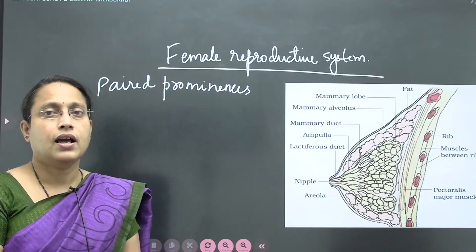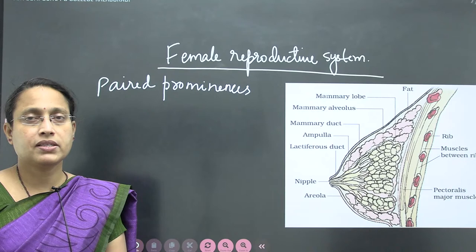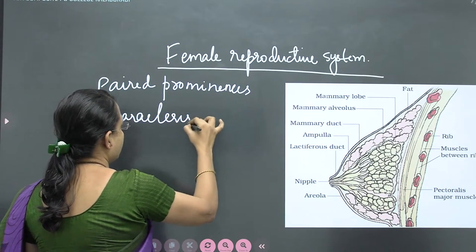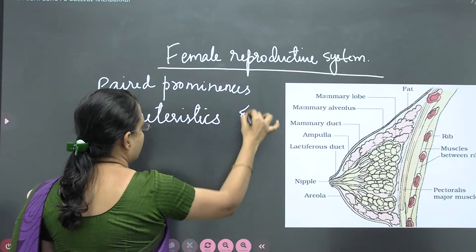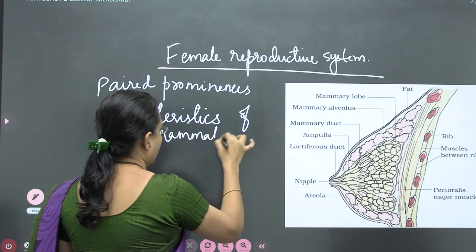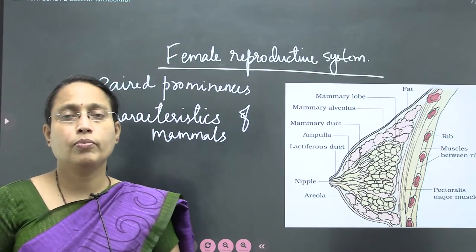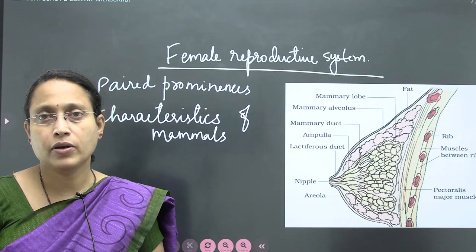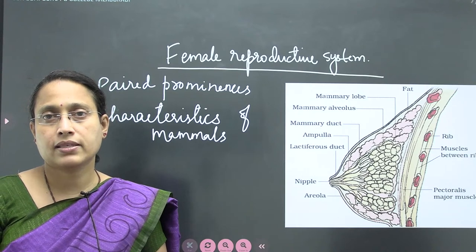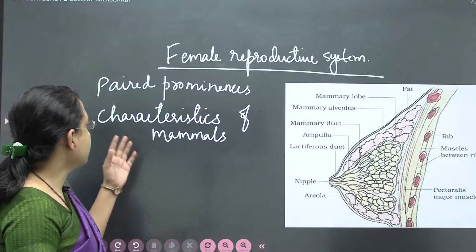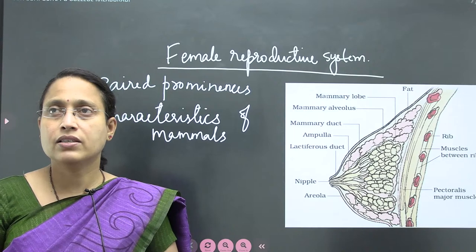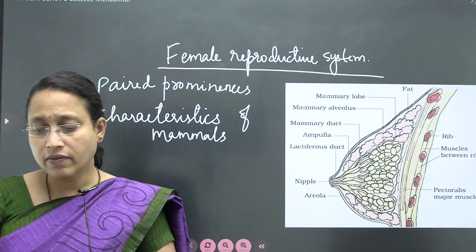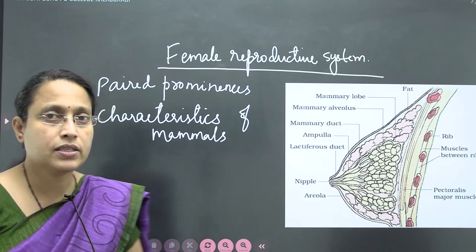Mammary glands are not present in all animals — they are particularly present in a certain taxon or group of animals, and that is a characteristic of mammals. Mammary glands are present in all mammals, making it one of the unique features of mammals, which is why the word 'Mammalia' has come for the class.